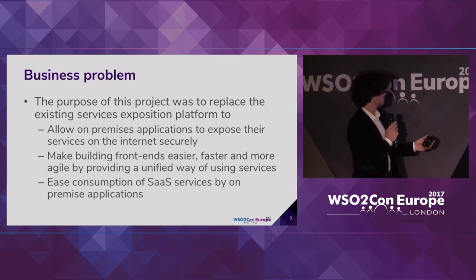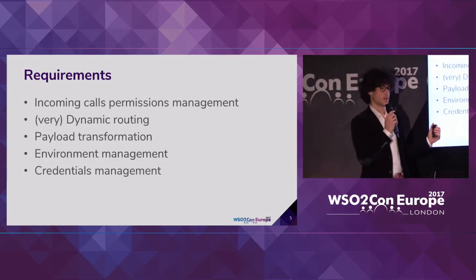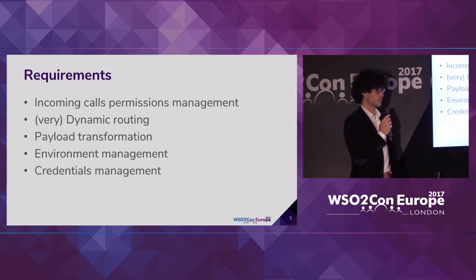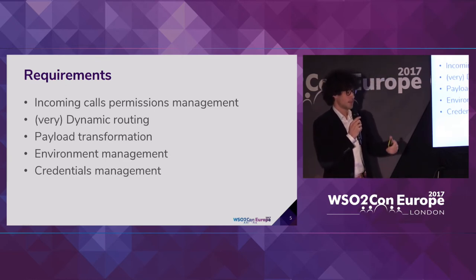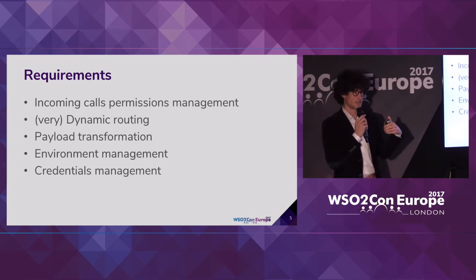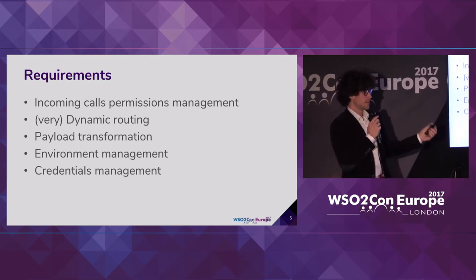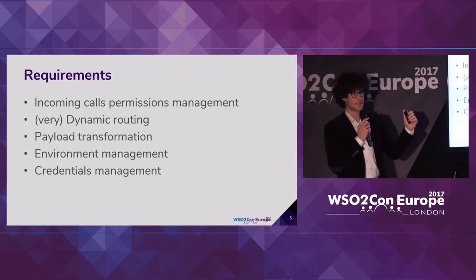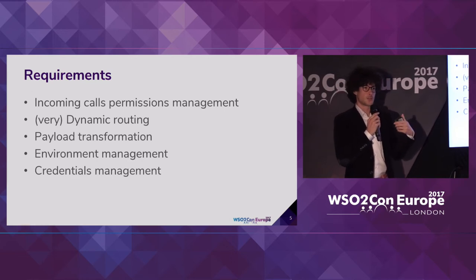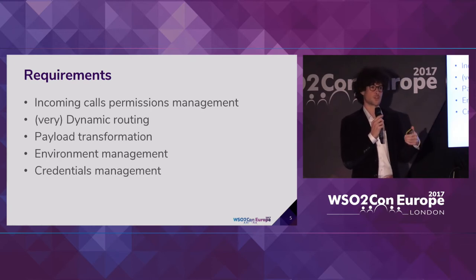The main features we had to build were: first, manage incoming calls and make sure every call was authorized before going through. Then dynamic routing — depending on the country or the brand used, we would call different back-end services. Then, sometimes, do some payload transformation. And finally, manage environments and credentials, meaning knowing for each environment the right URLs and which credentials to use.